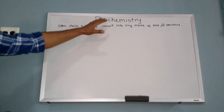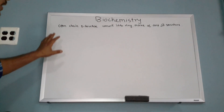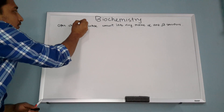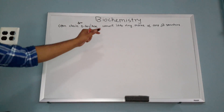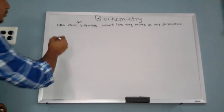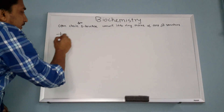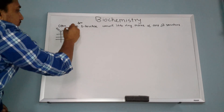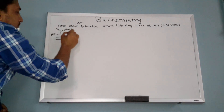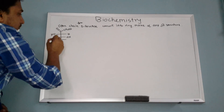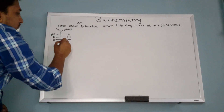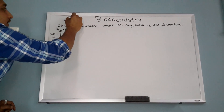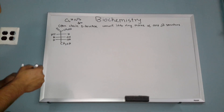Hello everyone, today my subject is biochemistry. I will explain my topic, which is the open chain form of fructose, converting from the open chain form into a ring to make alpha and beta structures. You should know the structure of fructose. The molecular formula of fructose is C6H12O6.